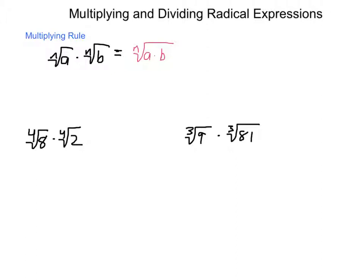So an example, we have the fourth root of eight times the fourth root of two. This is going to simplify into being the fourth root of eight times two. This is the fourth root of sixteen, which is the fourth root of two to the fourth. So our answer is simply two.